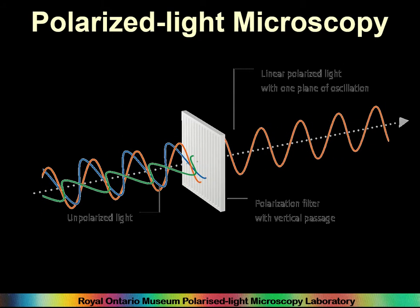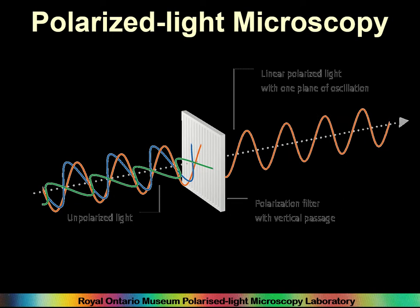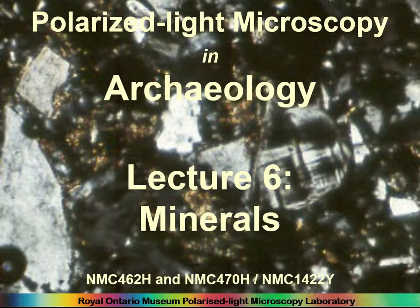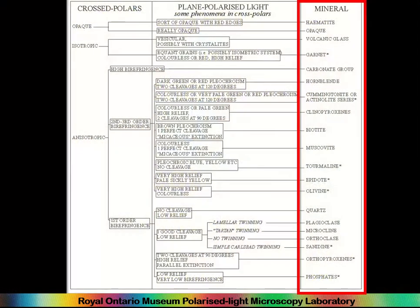This is Polarised Light Microscopy in Archaeology, Lecture 6: Minerals. We have gone through various properties of minerals seen in polarised light microscopes. Now we're going to do this from the other way around and go through all of the minerals, more or less in this order, as this is the cheat sheet in the manual, and talk about the properties that distinguish them. It's basically saying the same thing, only differently.